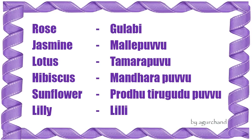Jasmine — Molle Puvvu. Lotus — Tamara Puvvu. Hibiscus — Mandara Puvvu. Sunflower — Roddu Thirugudu Puvvu. Lily — Lily Puvvu.